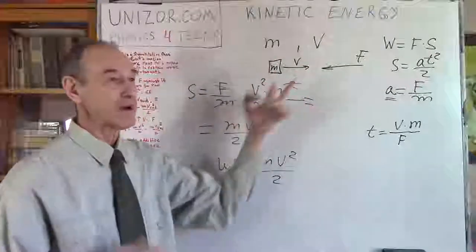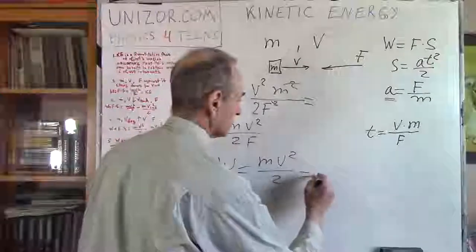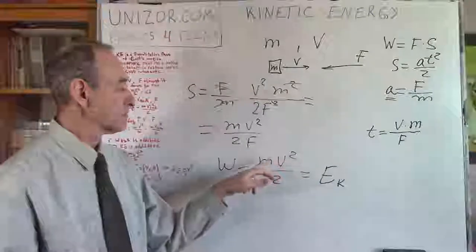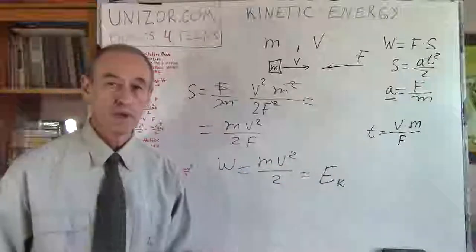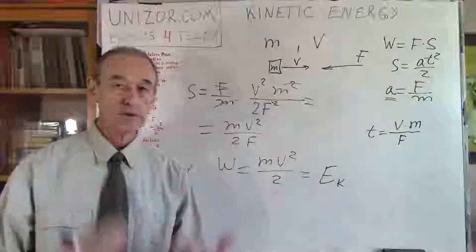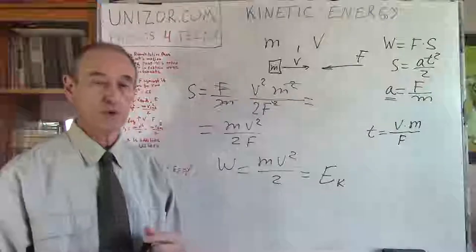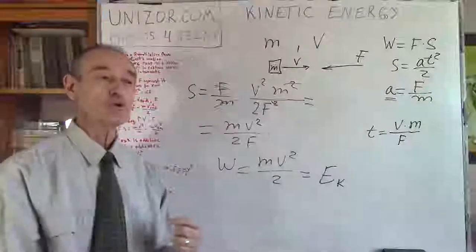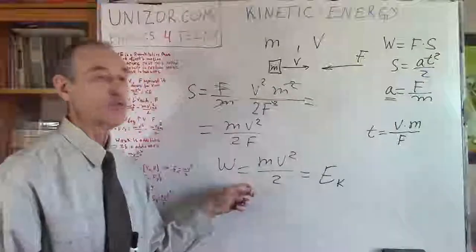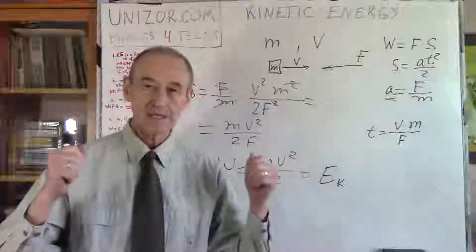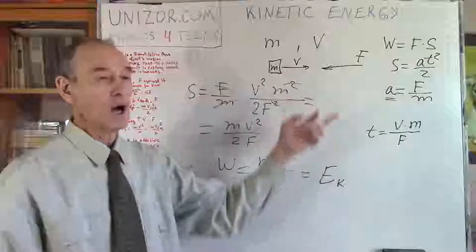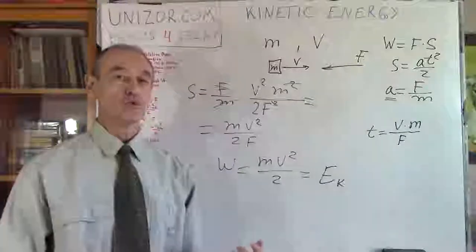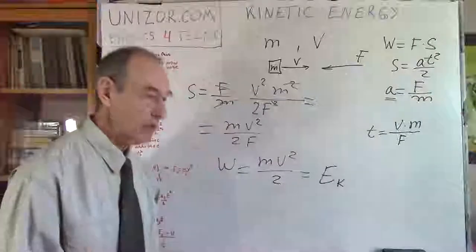There is a certain quantitative characteristic of motion, which I call kinetic energy: KE = MV²/2. This is the definition of kinetic energy for a moving object of mass M with speed V. It represents the amount of work that must be performed to stop this motion. No matter how you stop it, you perform this same amount of work, which depends only on the moving object.